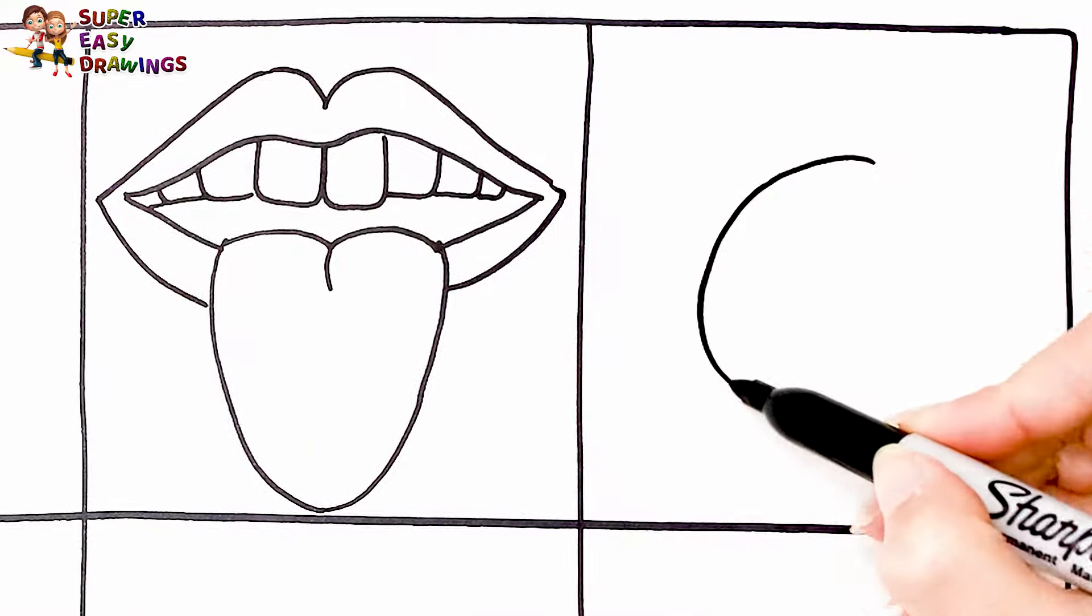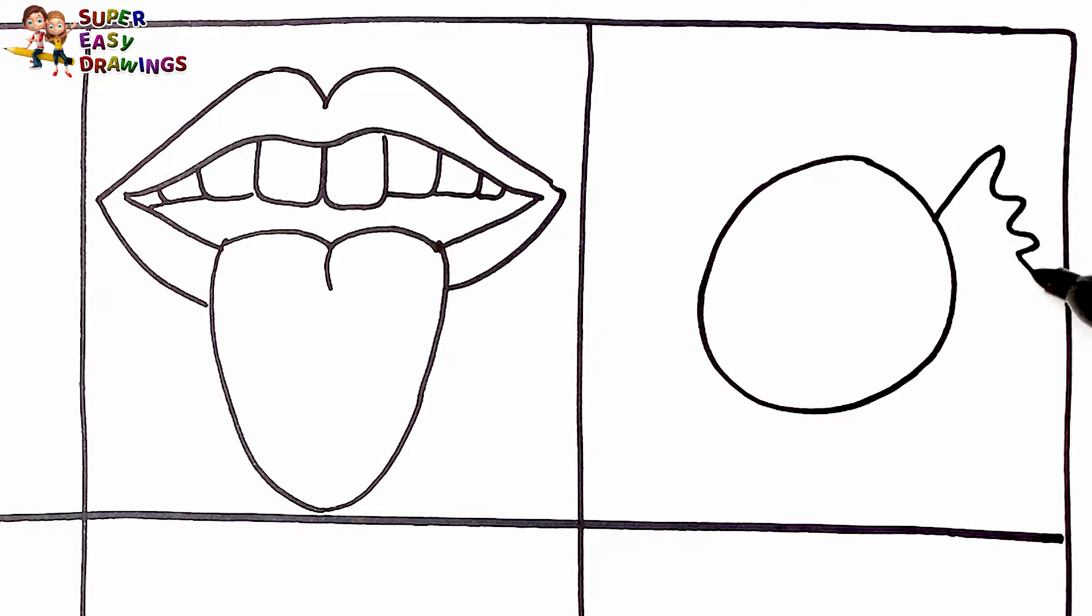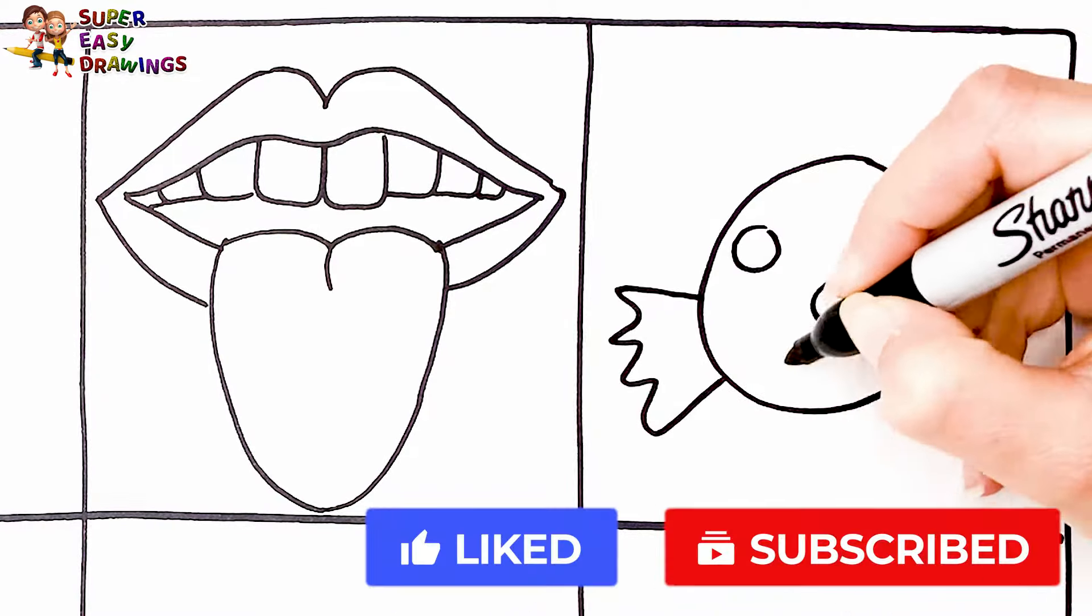In the last square in this row, I draw a candy with dots on it.